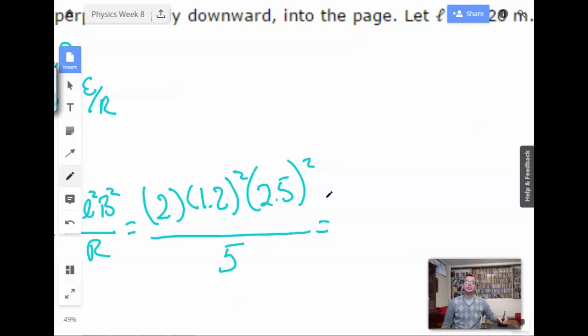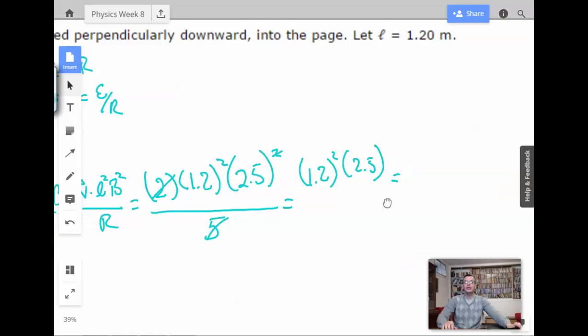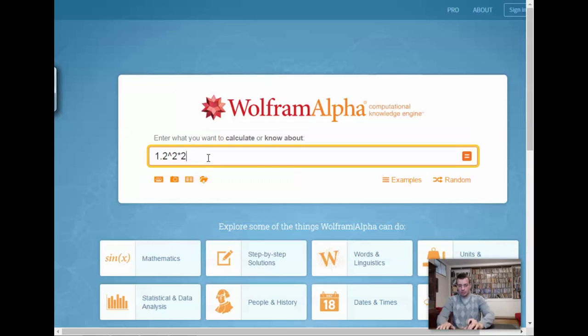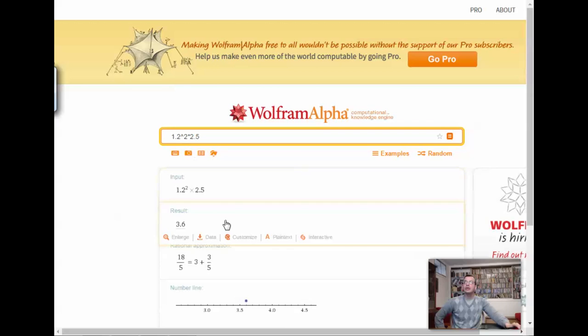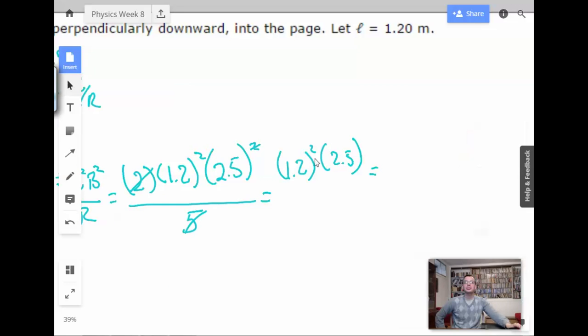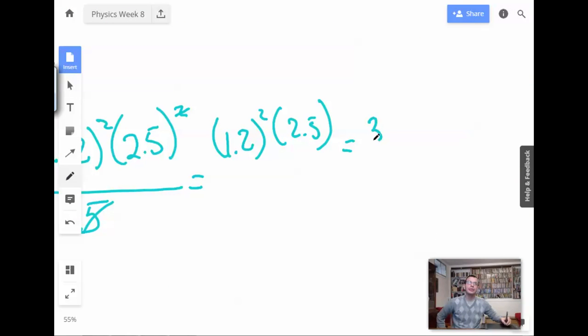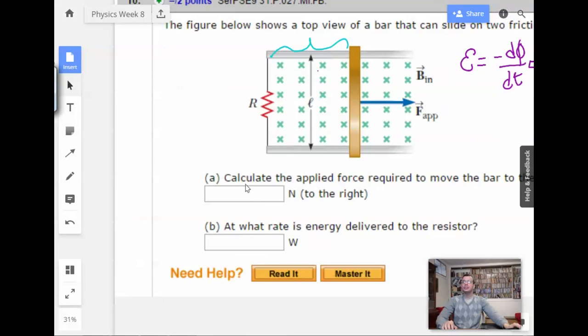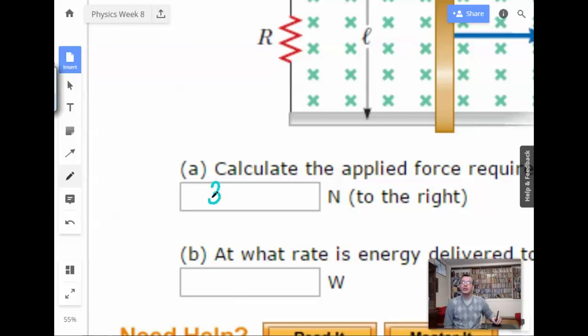I could probably simplify this a little bit. So 2 times 2.5 is 5. So I'm going to do 1.2 squared times 2.5. Everything else cancels out. Cancels out one of the .25. See that? See that? Pretty clever. Pretty clever. This is going to be 1.2 squared times 2.5. 1.2. 3.6. Hmm. That's surprisingly odd. 3.6. Or surprisingly even. There we go. 3.6 Newtons.